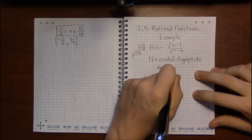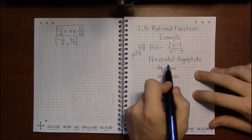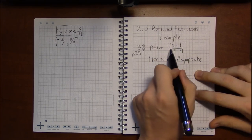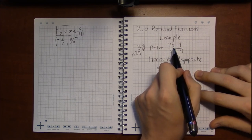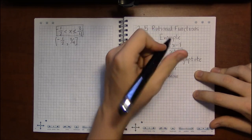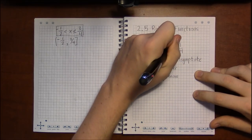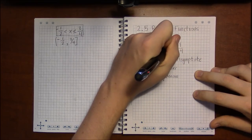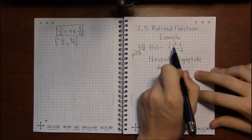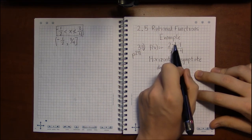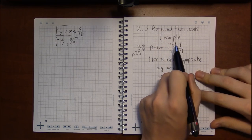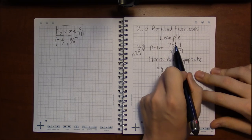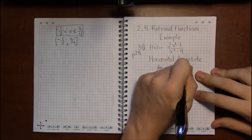So the degree of the numerator, I look for the highest power of x in sight. Well this is the only thing that has an x on it and it doesn't look like it has a power. But if it doesn't have a power you can always put 1 as the power because anything to the first is just itself. You haven't changed anything. So the degree of the numerator is just 1 because that's the highest power of x that I see.